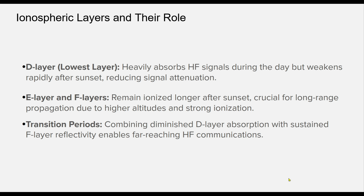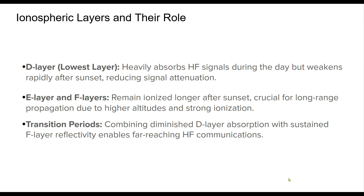The ionosphere's layered structure is critical to understanding gray line propagation. The D-layer, most active during daylight, diminishes past sunset, allowing HF signals to travel further. Higher layers like the E and F layers remain ionized longer, especially the F2 layer, which is essential for long-range DX. These interactions peak during gray line transitions.